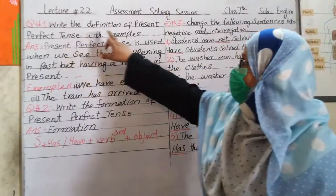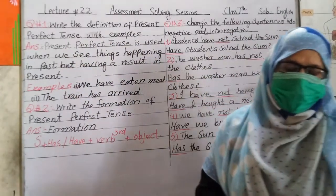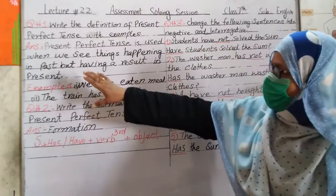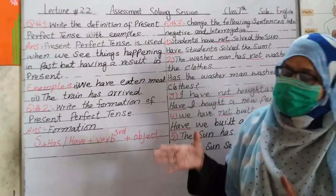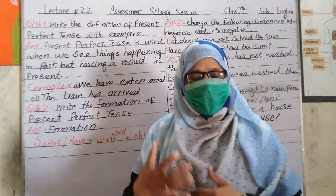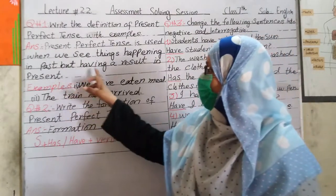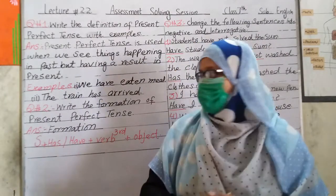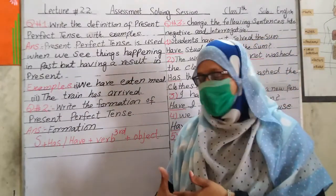Question 1: Write the definition of present perfect tense with example. The definition is: Present perfect tense is used when we see things happening in the past but having a result in the present. جب ماضی میں کچھ چیزیں ہو رہی ہوتی ہیں لیکن اس کا result ہمیں present میں ملتا ہے۔ Example: 'We have eaten meal' — ہم کھانا کھا چکے ہیں۔